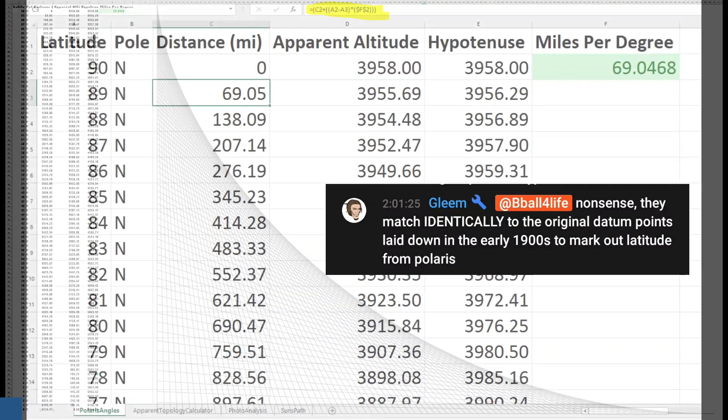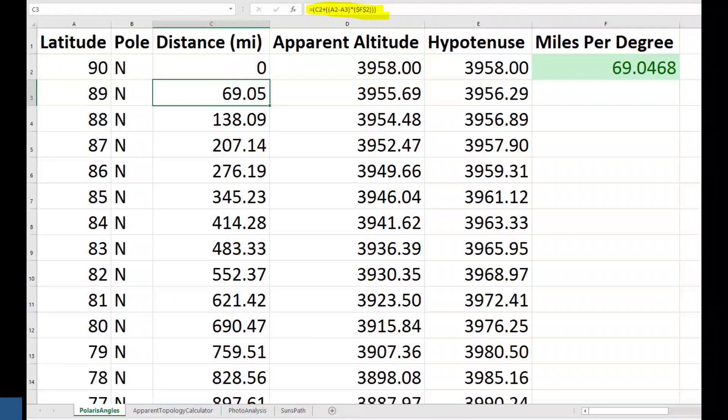The problem with this model is that his distance to Polaris is 3,958 miles. Now Gleam, I just have one question. Well, several questions actually.